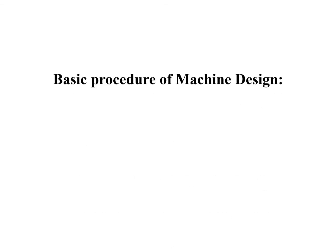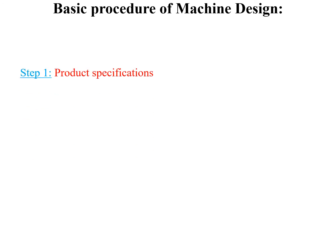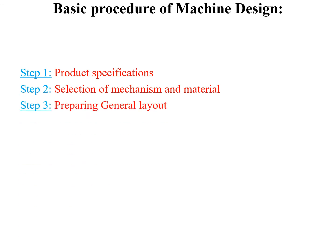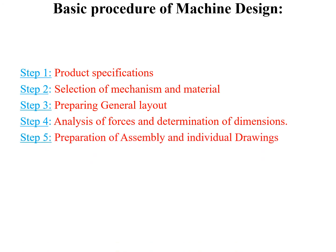The basic procedures of machine design involve five steps: first is product specification; second is selection of mechanism and materials; third is preparing a general layout; fourth is analysis of forces and determination of dimensions; fifth is preparation of assembly and individual drawings. We will see each one by one.